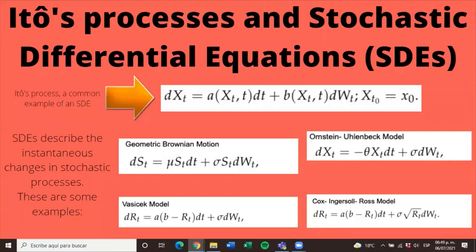Now, we are going to explain what an Itô process and a stochastic differential equation are. An Itô process is a common example of a stochastic differential equation given in a specific form with an initial condition. The first part is the derivative part, which is deterministic, and the second part is the random part. A stochastic differential equation describes the instantaneous changes in stochastic processes. Examples include: the Geometric Brownian motion, the Ornstein-Uhlenbeck model, the Vasicek model, and the Cox-Ingersoll-Ross model.